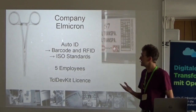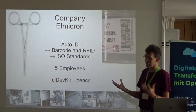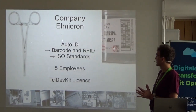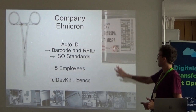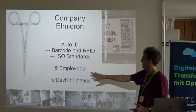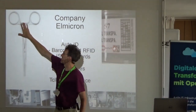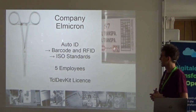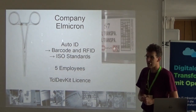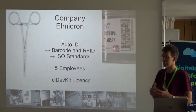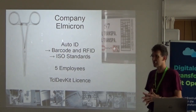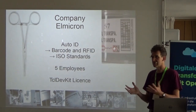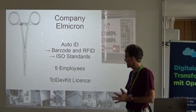My company, Elmicron, is my personal company — five people — and we are in barcoding. What's called barcode is this stuff, and here you have an RFID tag, something used in hospitals. We are very active in ISO standards; I'm in ISO standardization. I got that from my dad, who started in the 70s with barcodes, so I grew up with that subject.